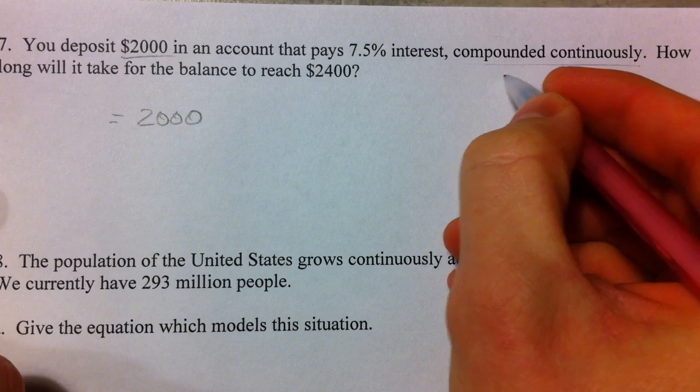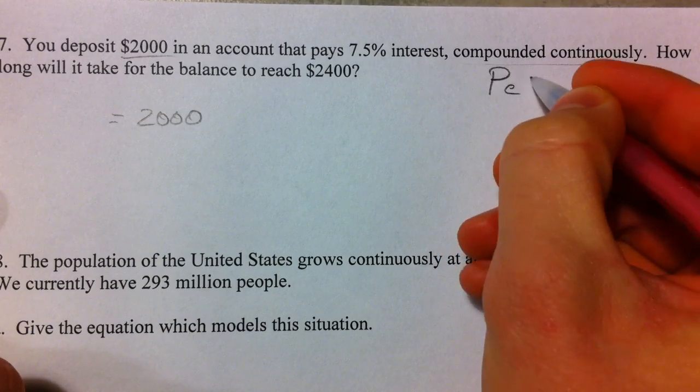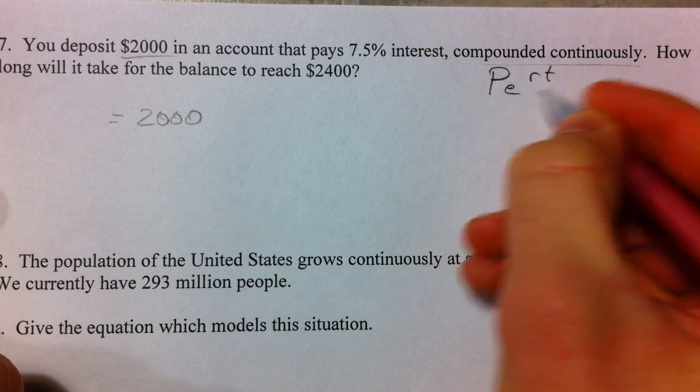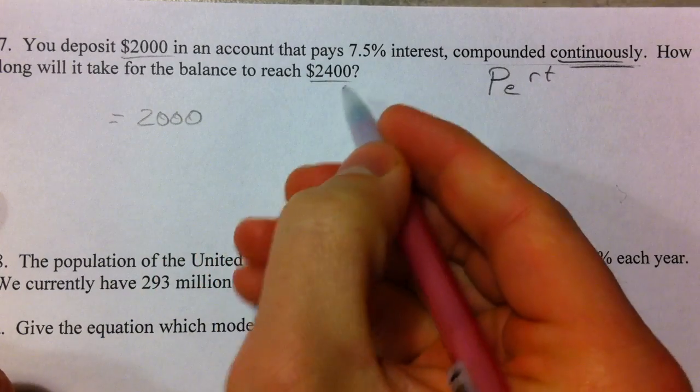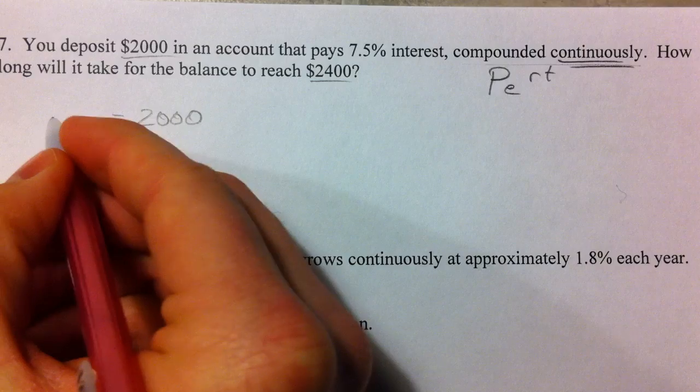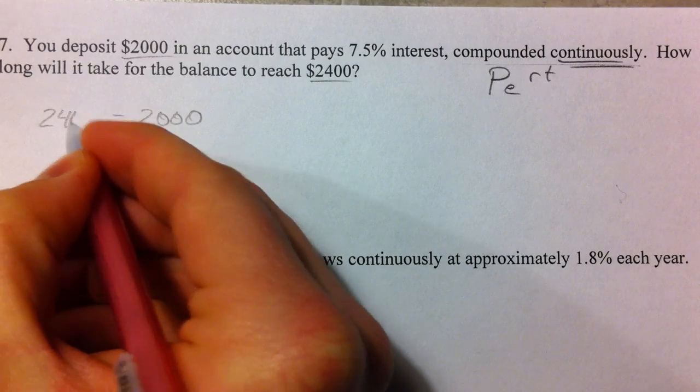Pays 7.5% interest compounded continuously. And so what that tells you is you're going to use our PERT equation. Anytime you see that continuously. How long will it take to get $2,400? So, we want $2,400. That's what's going on the other side of the equal sign.